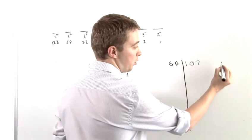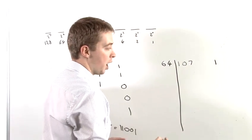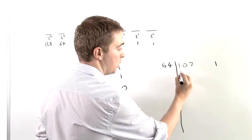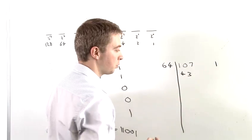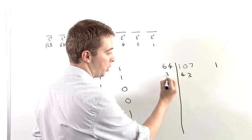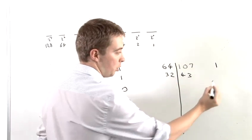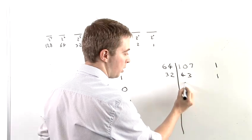The result of that, of course, is 1, and the remainder is 43. So we're now going to divide by 32. The result, again, is 1, and the remainder is 9.